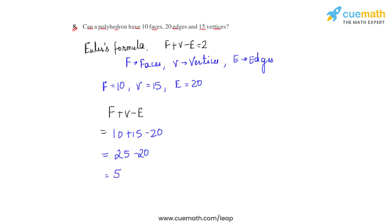As we can see that the result is 5 but it should be 2 which is the right hand side of the Euler's formula. Hence we can say that the values which are given in this question do not satisfy the Euler's formula. Hence a polyhedron of these values is not possible.